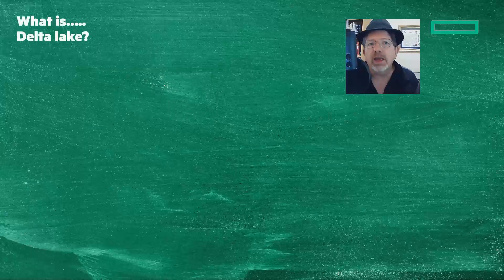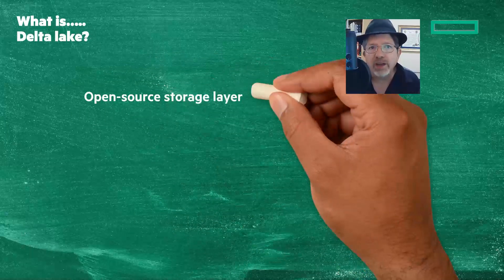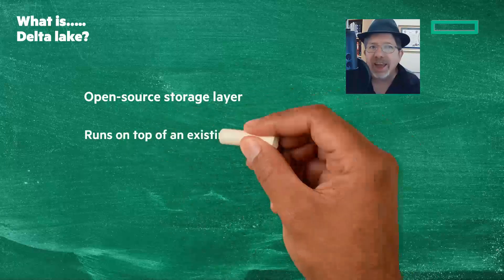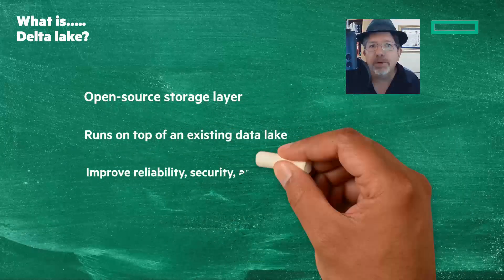What is Delta Lake? A Delta Lake is an open source storage layer designed to run on top of an existing data lake and improve its reliability, security, and performance.